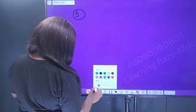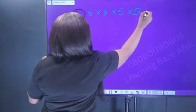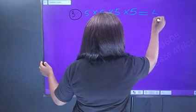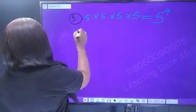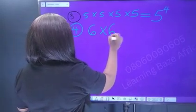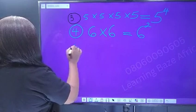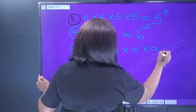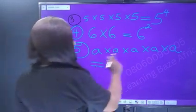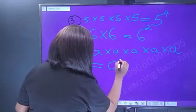If you have five times five times five times five, what will this give in index form? The base is five and the index will be one, two, three, four — that is five raised to power four. If you have six times six, it will be six raised to power two. And if you have a times a times a times a times a, the base is a with index one, two, three, four, five — that is a raised to power five.